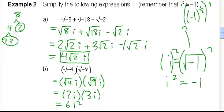Now, if I have 6 times i squared, we know what i squared is. What is it? Negative 1. So, I'll just keep going here. That's 6 times negative 1, which gives me negative 6.